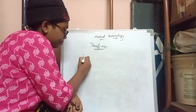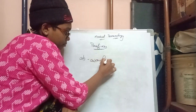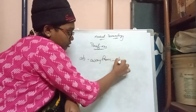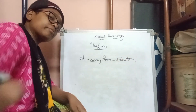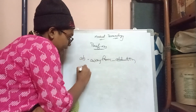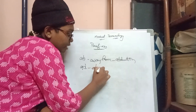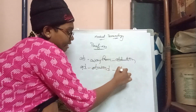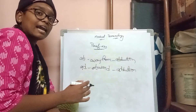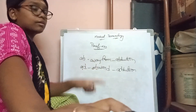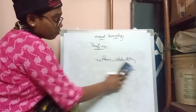The next prefix is 'ab,' which means away from — for example, 'abduction.' Abduction means the hand is moving away from the body. In contrast, 'ad' means toward or near the body, as in 'adduction.' So abduction is the hand moving away from the body, and adduction is the hand moving toward the body.